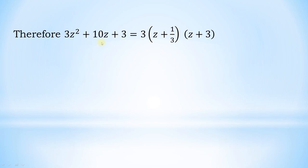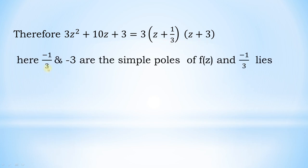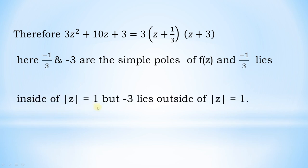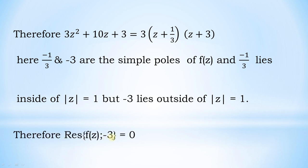Therefore 3z² + 10z + 3 = 3(z + 1/3)(z + 3). So z = −1/3 and z = −3 are simple poles of f(z). The pole z = −1/3 lies inside the unit circle |z| = 1, while z = −3 lies outside. Therefore the residue of f(z) at z = −3 equals 0 (it contributes nothing).